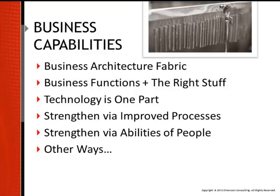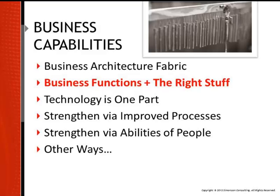Other ways to strengthen business capabilities are to recruit the right people, to buy or build new software, to purchase ergonomic chairs — you get the point. Business capabilities depend on having the right people, the right abilities, the right processes, the right technologies — in other words, all the right stuff to perform business functions.